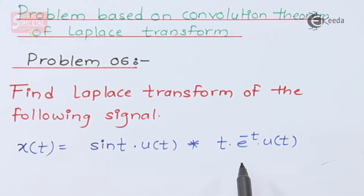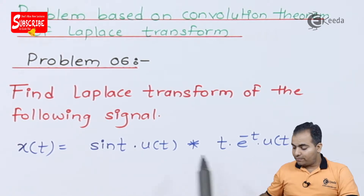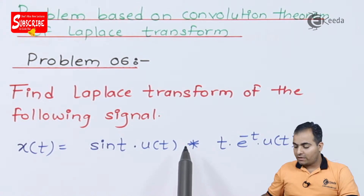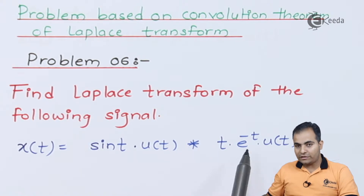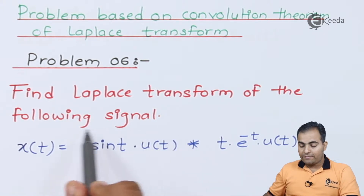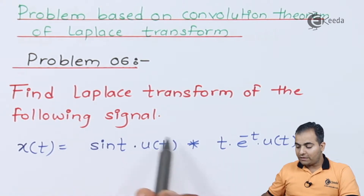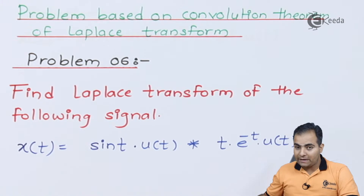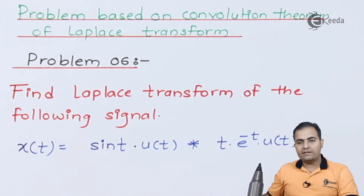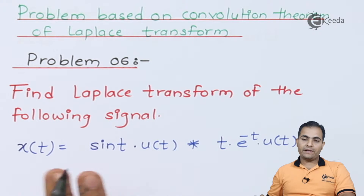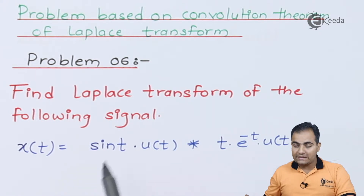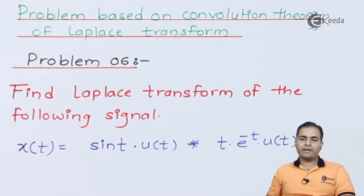We have to find the Laplace transform of the given function. According to the convolution theorem, first find out the Laplace transform of both functions separately and then multiply them with each other. So we will find the solution of both functions separately and then multiply.